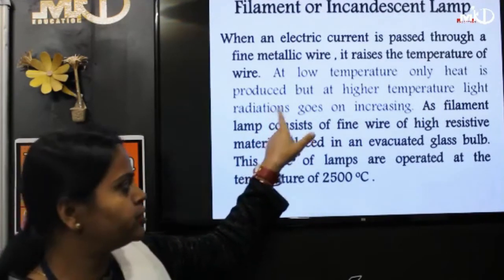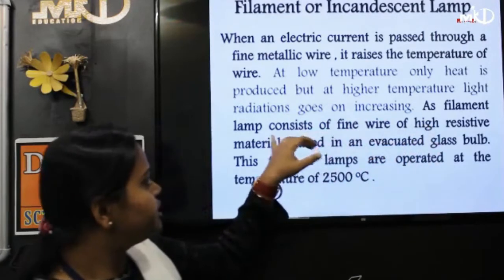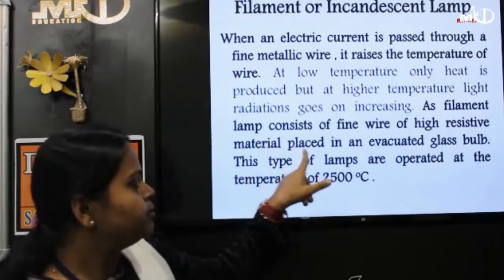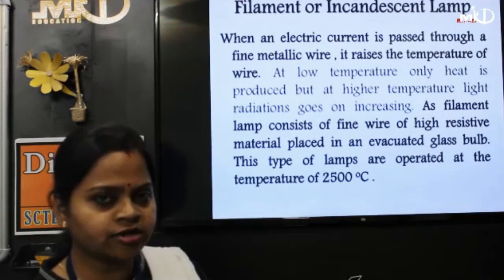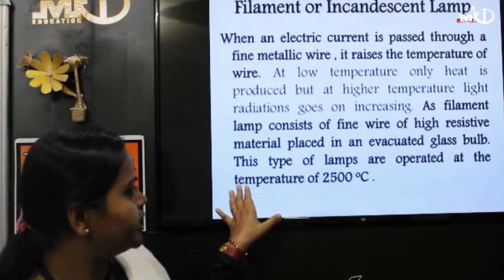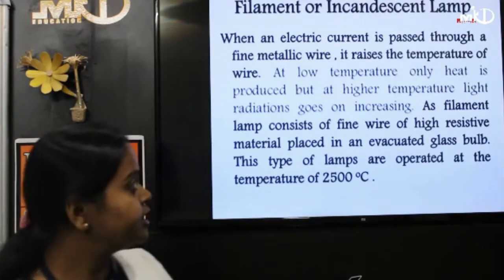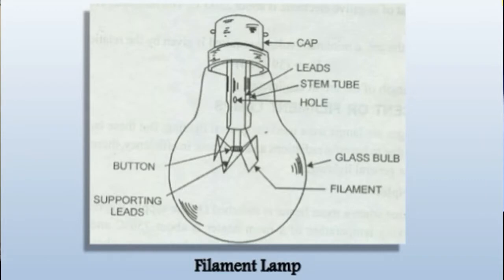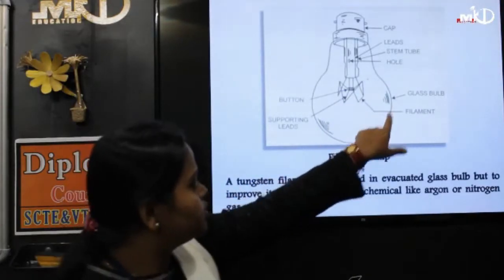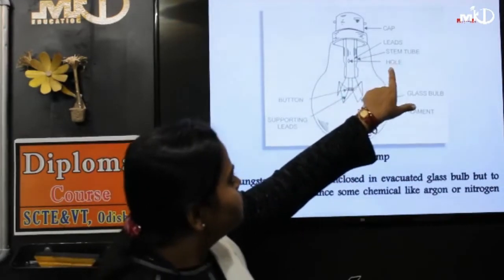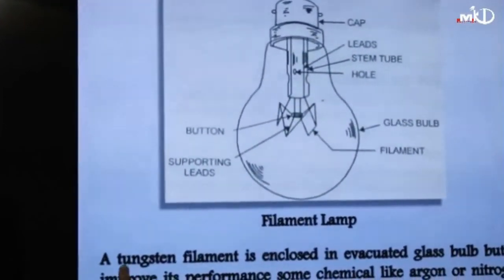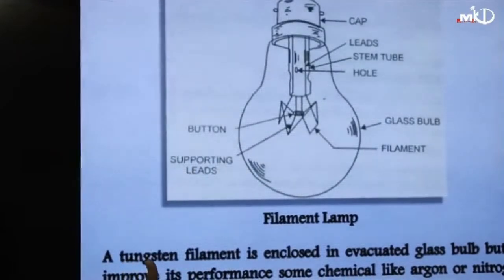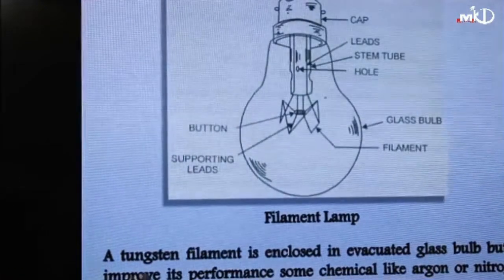The filament lamp consists of a fiber of high resistivity material placed in an evacuated glass bulb, within which a tungsten filament is used. It is operated at a temperature of 2500 degrees centigrade. The lamp has a glass bulb as the outer cover, leads, a holder, a cap, and the main component — the tungsten filament enclosed in the evacuated glass bulb — which improves performance.